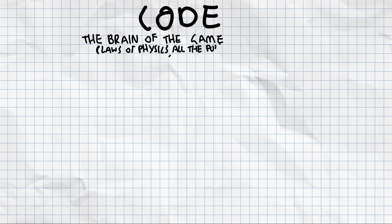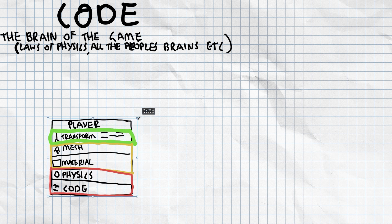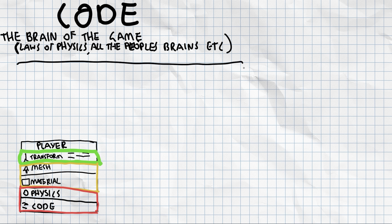So onto code now. This is the brain of the game. And if we're still talking about the playground, this is everyone's brains. This is the laws of physics in that playground. It's when the lights turn on and off. It's when how the swings swing. It's what people do. And it's everything. It's basically all of the systems that make that playground work and make the things inside that playground move around and do stuff.